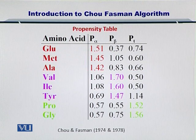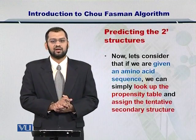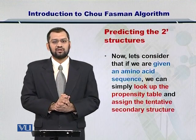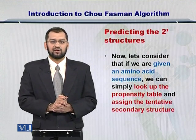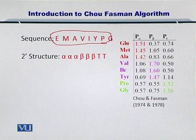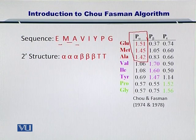Chou et al. developed this statistic and they mined the protein sequence databases as well as the known structures and came up with these values. If you want to use these values to predict the secondary structure, then it becomes very easy. Let us consider an amino acid sequence and, by using this propensity table, see how we can calculate the overall secondary structure. In this example, the sequence for the amino acids is given, and the secondary structure which we want to predict is given here. Glutamine, methionine, and alanine are all alpha helix formers at a priority.